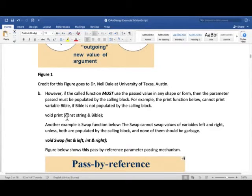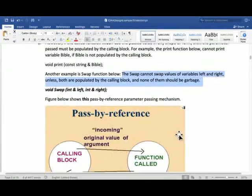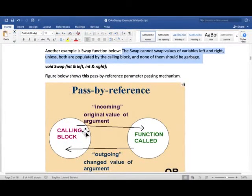Perhaps pass-by-const-reference is super good for this, as discussed in the previous video which you must have watched already. Another example is the swap function below. This has some value, this has some value. To swap them, unless both are populated by the calling block and none of them should be garbage, this situation of pass-by-reference is shown by this picture again by Dr. Nell Dale. Incoming has some value, the original value, function changes it in some way, and outgoing has some value. Something like this you will also be doing in preparation work for lab six, and you'll understand this in more detail at that time.